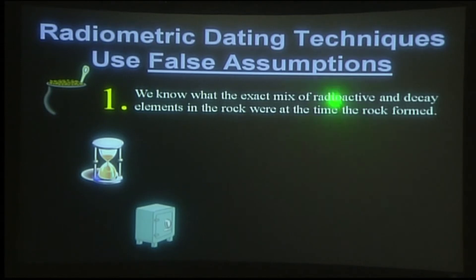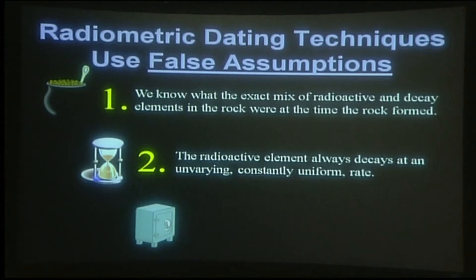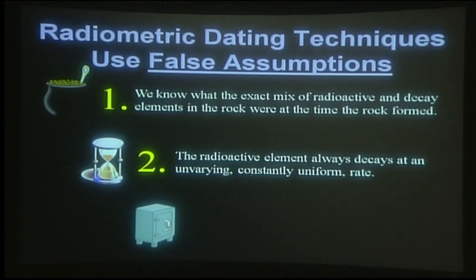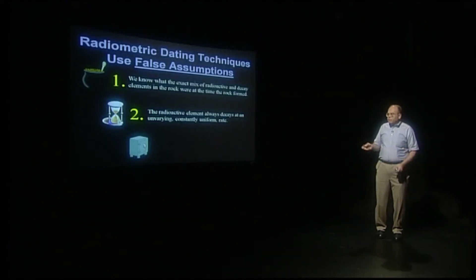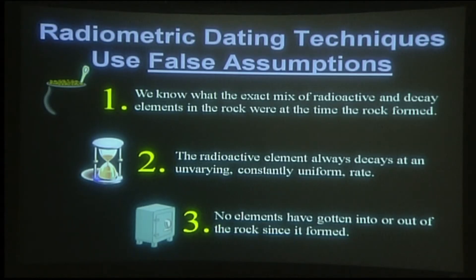And so this is a very false assumption — to say that we know the starting conditions when we were not there. A second false assumption in all radiometric dating processes is that the radioactive element always decays at the same, unvarying, constant, uniform rate. And another would be that no elements have gotten into or out of the rock since it formed. There's an assumption of a closed system, which of course doesn't exist in nature to begin with.